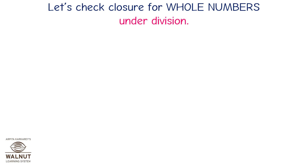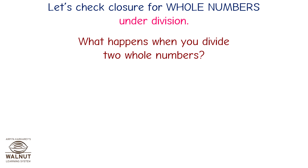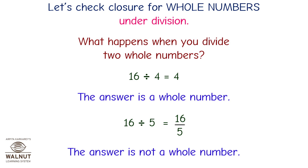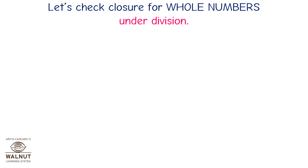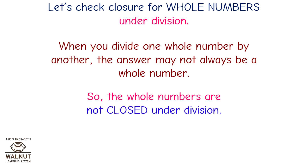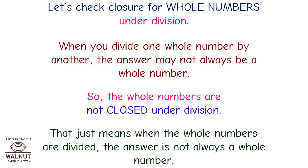Let's check closure for whole numbers under division. 16 divided by 4 is equal to 4 — a whole number. But 16 divided by 5 is equal to 16 upon 5, which is not a whole number. When you divide one whole number by another, the answer may not always be a whole number. So whole numbers are not closed under division.